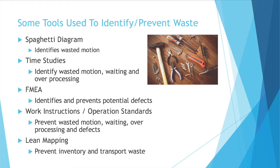FMEA is a risk analysis tool used to examine a design or a process and identify everything that could go wrong, how bad it would be, the likeliness of it, and how easily you could detect it. This will help you prevent potential defects.